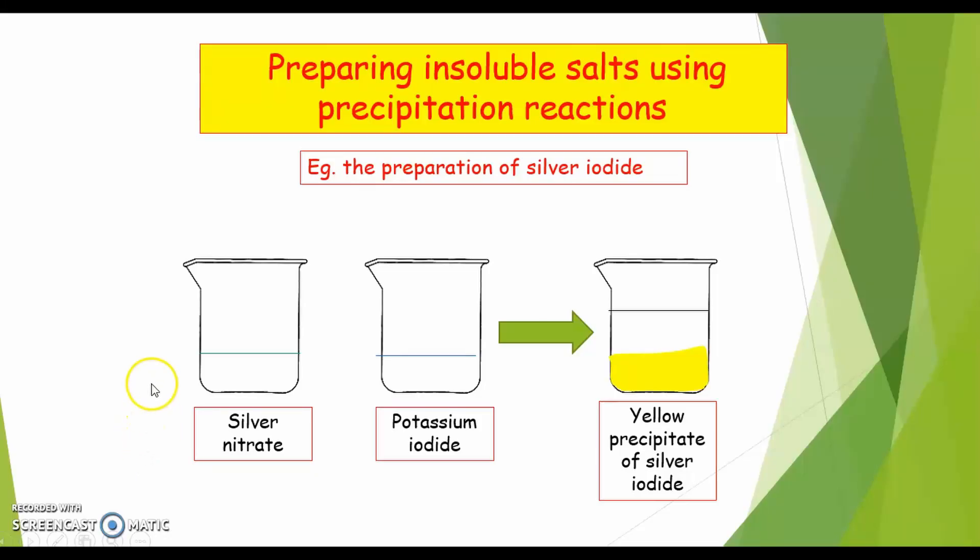Hello everyone, today I'm going to explain how to prepare insoluble salts using precipitation reactions. In this example, we're going to prepare the insoluble salt silver iodide. To form silver iodide, we need two soluble salts as reactants: silver nitrate and potassium iodide.